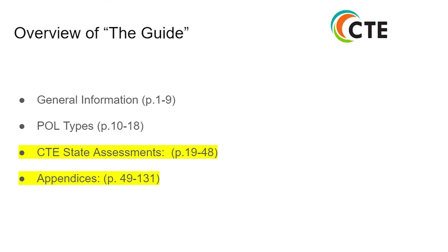The guide can be broken down into four areas. First, general information on pages 1 through 9. POL types on pages 10 through 18. CTE state assessments, which we will be focusing on this morning, pages 19 through 48. And the appendices, pages 49 through 131, and we will look at those relevant to CTE test training.